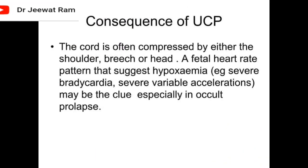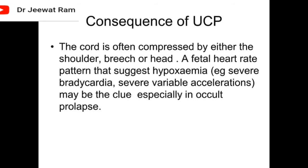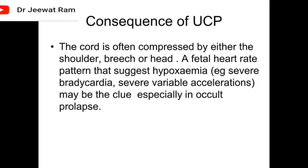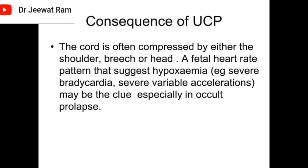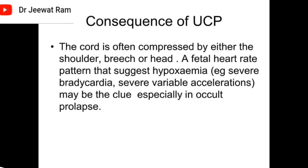Consequences of umbilical cord prolapse: the cord is often compressed by either the shoulder, breech, or head. A fetal heart rate pattern that suggests hypoxemia — severe bradycardia or severe variable decelerations — may be the clue, especially in occult prolapse.